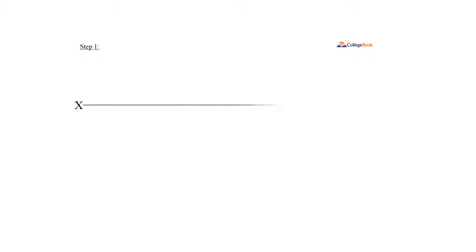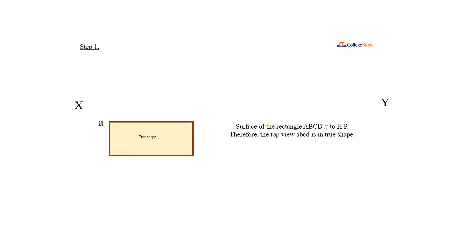Step 1: The surface of the rectangle ABCD is parallel to the horizontal plane. Therefore, the top view ABCD is in true shape. The small side is perpendicular to the vertical plane. Therefore, the front view of the edges A'D' and C'D' are in true length.